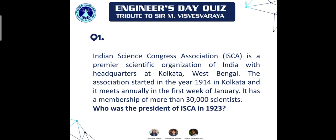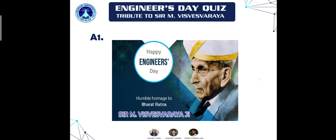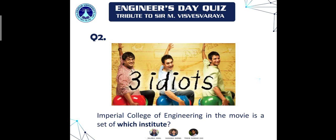The answer to question one is Sir M. Visvesvaraya. Moving on to question two: the Imperial College of Engineering depicted in the movie '3 Idiots' is based on which real institute? This is an easy one — it is IIM Bangalore.